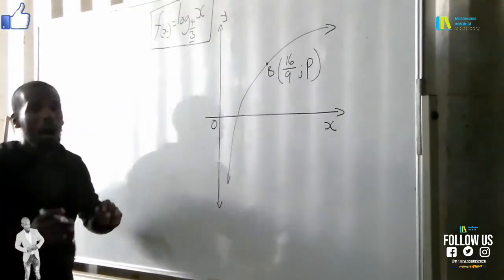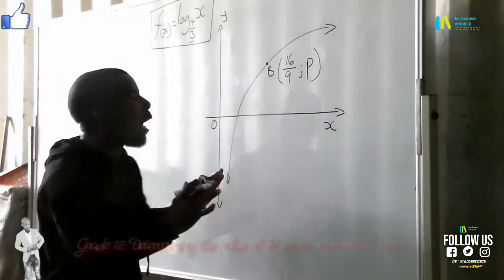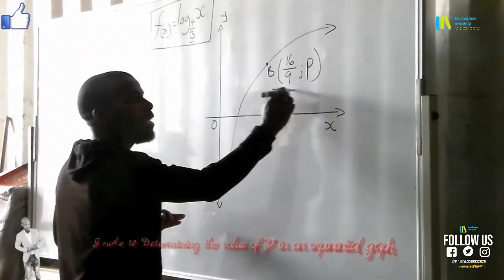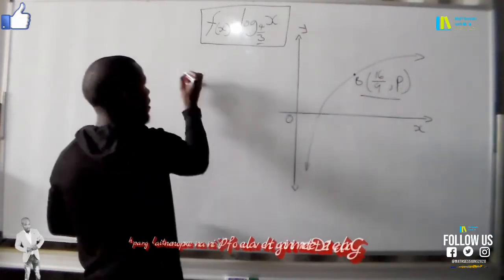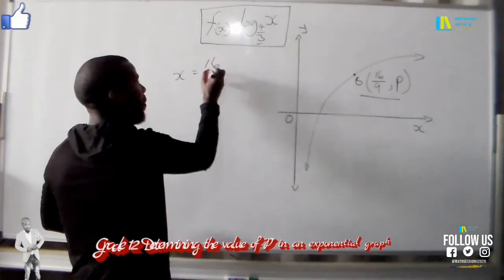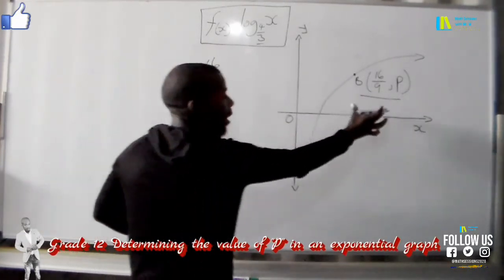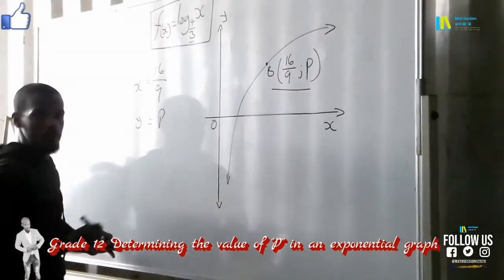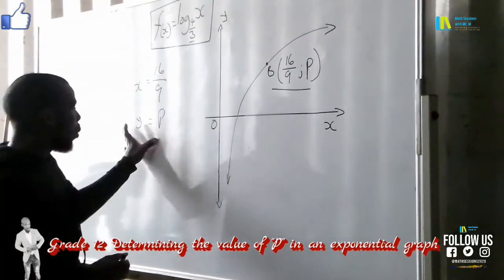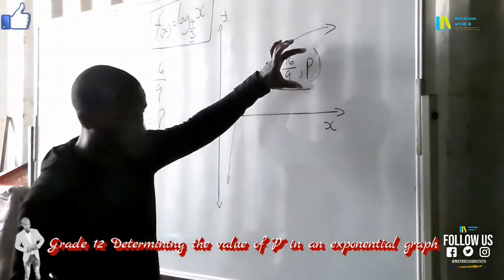Now we are asked in this issue, because we are given point B, so point B has an x value of 16/9, x is 16/9, and point B also has an unknown value which is y equals p. Basically now we are asked to find the value p.